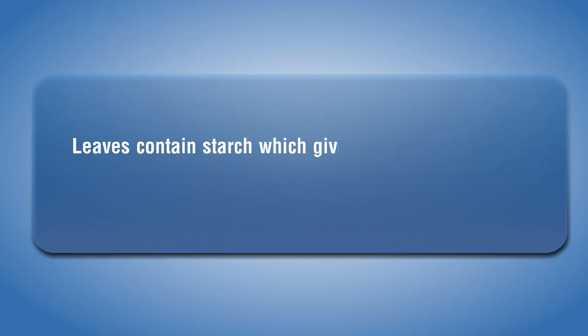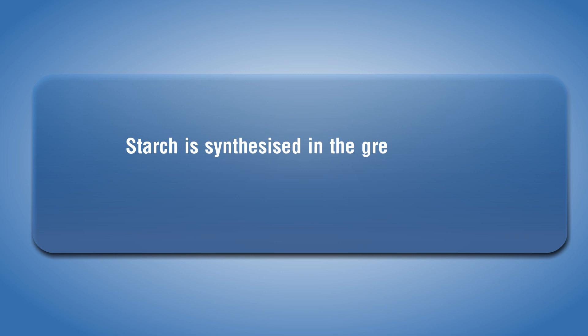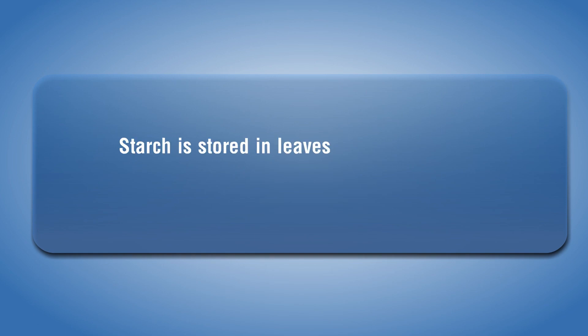Leaves contain starch which gives a blue-black colour with iodine solution. Starch is synthesized in the green leaves in the presence of sunlight through photosynthesis. Starch is stored in leaves or transported to other parts of the plant.